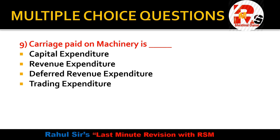Question nine: carriage paid on machinery is — capital expenditure, revenue expenditure, deferred revenue expenditure, or trading expenditure. Machinery is one kind of asset. When we pay carriage for purchasing machinery, it increases the value of the machinery. Any expenditure on an asset that is a one-time cost increases its value, and that is why it is called capital expenditure. So the right answer for question nine is capital expenditure.